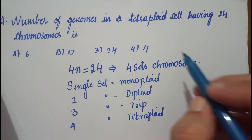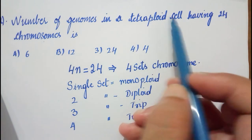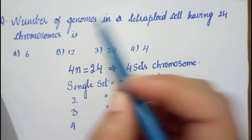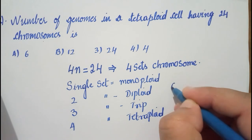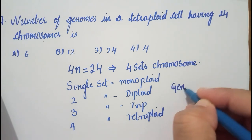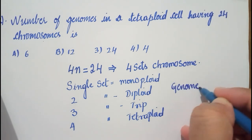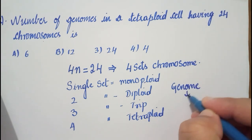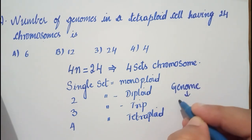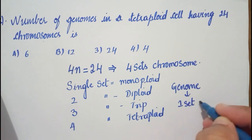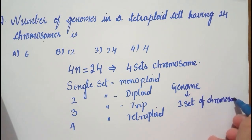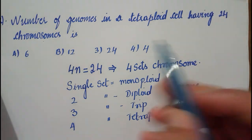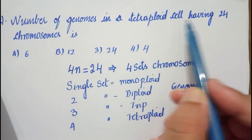The question is asking for the number of genomes in a tetraploid cell. What is a genome? A genome is the sum total of all the genes that are present on one single set of chromosomes.